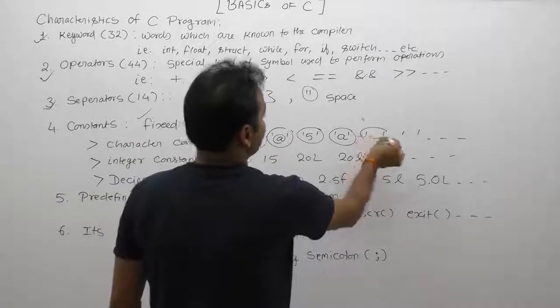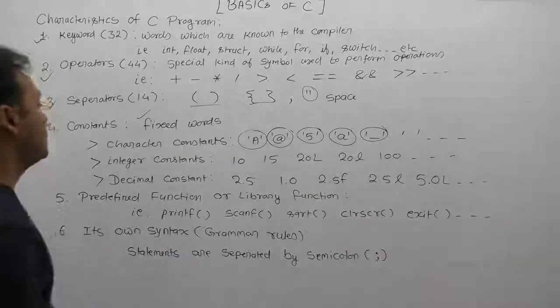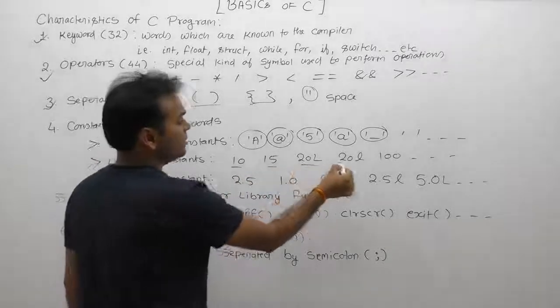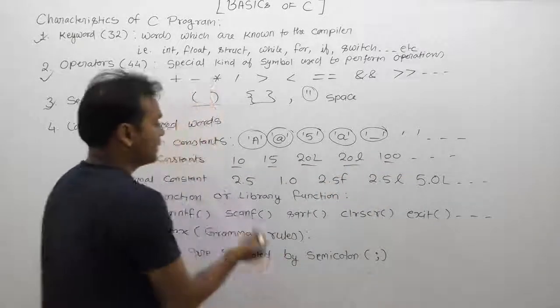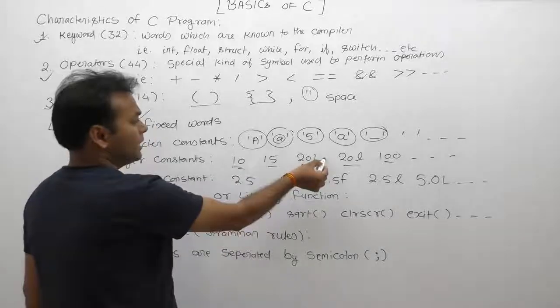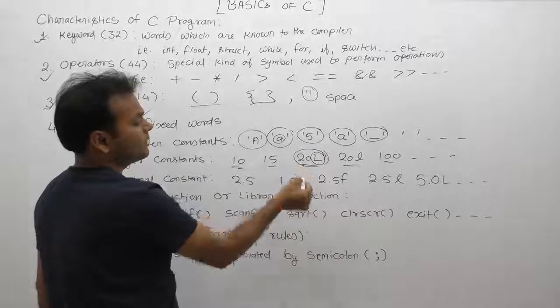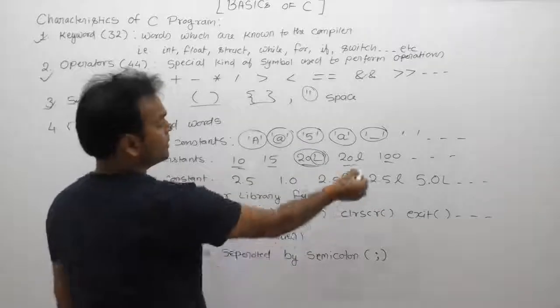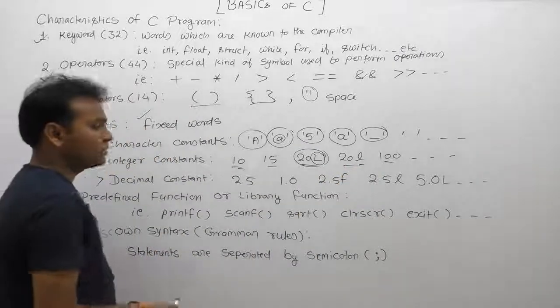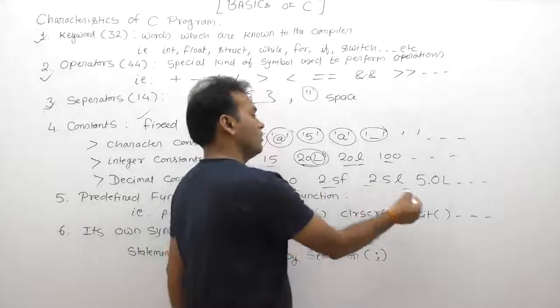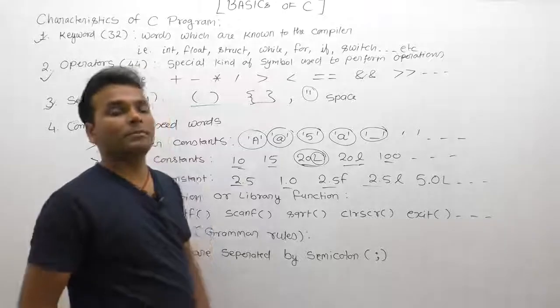Character constants are any symbol enclosed inside single quotes. Integer constants are predefined values, real numbers. L stands for long type of constant. Here, 20 is representing a long value. Next, decimal constants like double, float, or long double. We are representing different types of constant values.